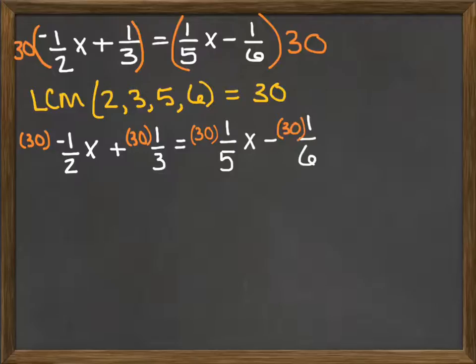When you multiply thirty times negative one-half x, you're going to end up with negative fifteen x. And then I end up with thirty times one-third, which is ten.